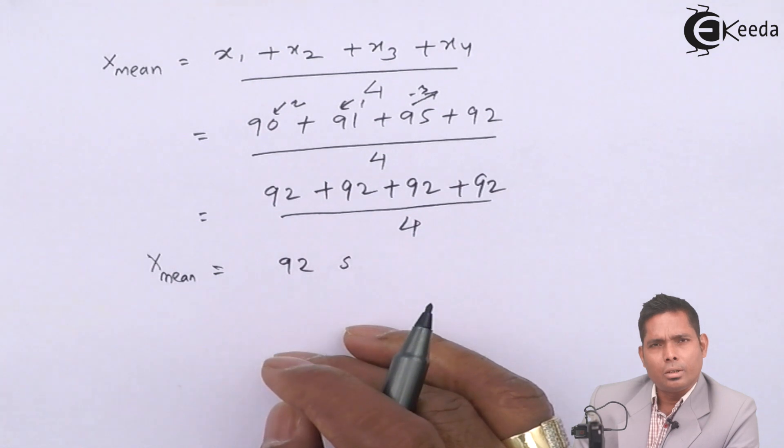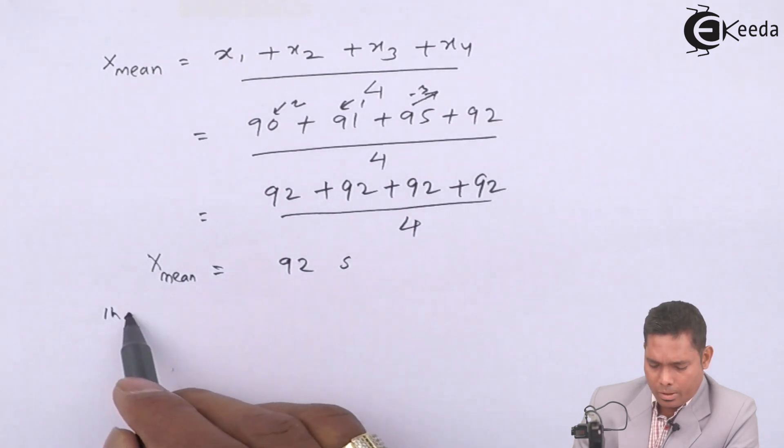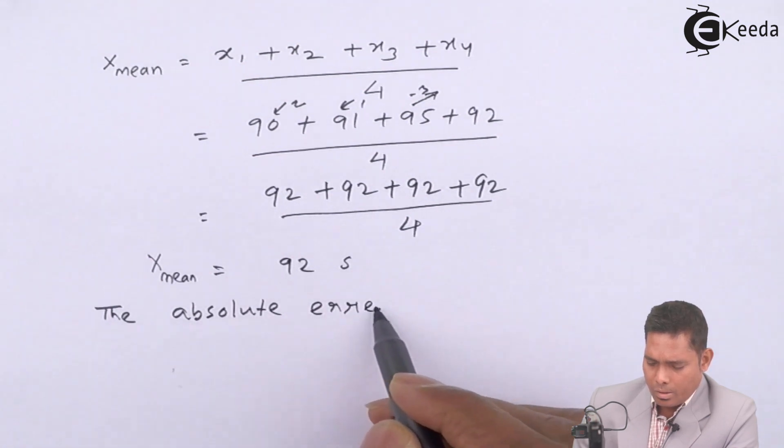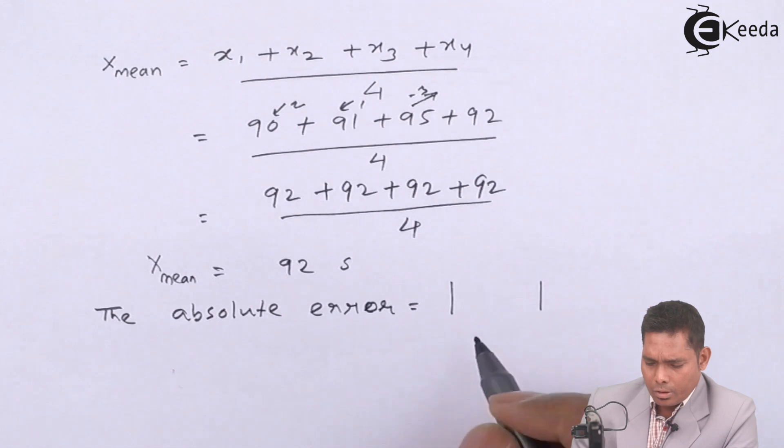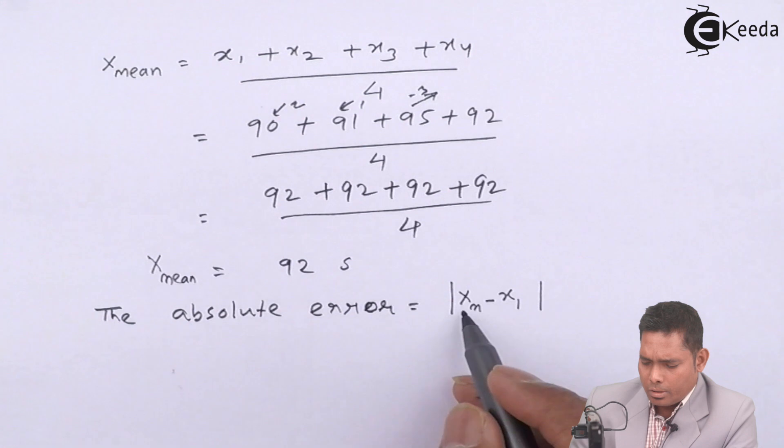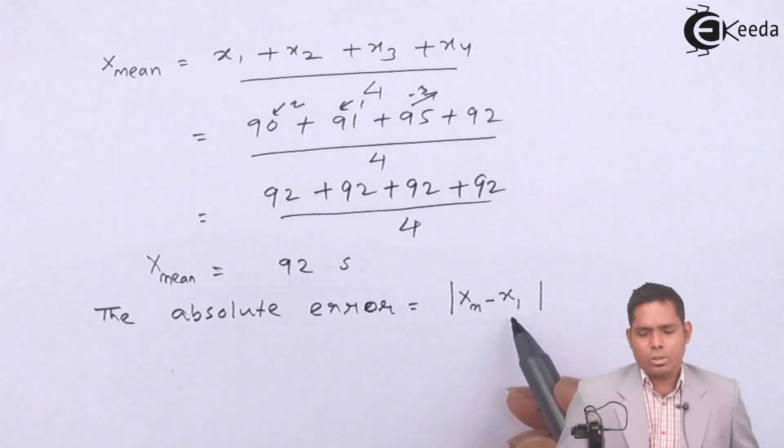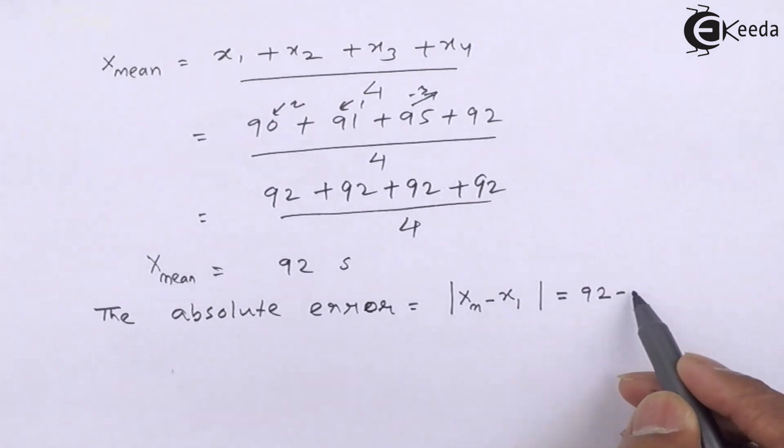And with this, there is introduction of error. So the mean error you have to write. The absolute error is defined as the mod of the difference between the X mean and X individual. There are 4 readings. So Xm minus X1. Then we will have the next absolute error. Xm minus X2 and so on. So if I had Xm minus X1, it comes out to be 92 minus the first reading was 90. So it is 2.